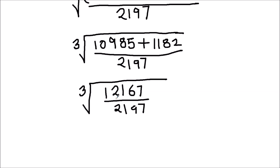Now we have a fraction with numerator 12167 and denominator 2197, and we need to find the cube root of this improper fraction. For finding the cube root, we are going to first find the cube root of the numerator and denominator separately. So let's find the cube root of numerator 12167.